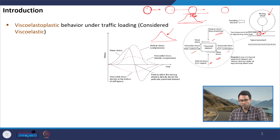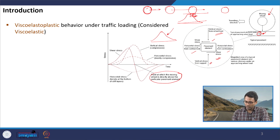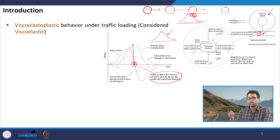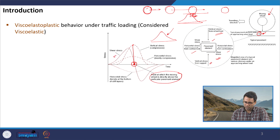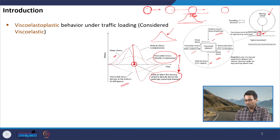This is the variation of stress with time for this particular element when the load approaches it. You can see that this is the point at which the moving load is directly above the element — here we expect the maximum vertical stress. Here the shear stress is zero because this is the axis of symmetry where the shear stresses cancel out. This is the variation of horizontal stress, which is compressive above and tensile below. There will also be tensile stresses at the bottom of the bituminous layer which build up when the load approaches.